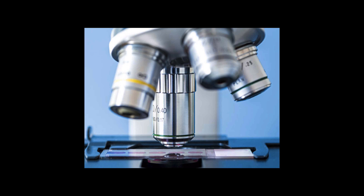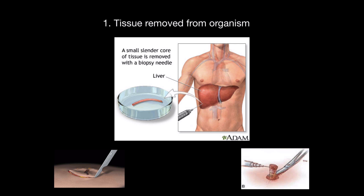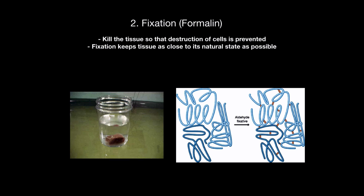So how do we get those slides? First, the patient goes to the doctor where the tissue is removed — this removed tissue is called a biopsy. The biopsy is then sent to a pathological laboratory for fixation. Fixation is an extremely important step because it kills the tissue so that destruction of the cells is prevented. Fixation also keeps the tissue as close to its natural state as possible by forming cross-links in protein, just like you see here. The most frequently used fixative is formalin.